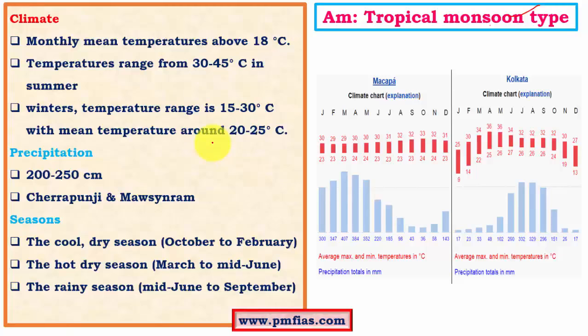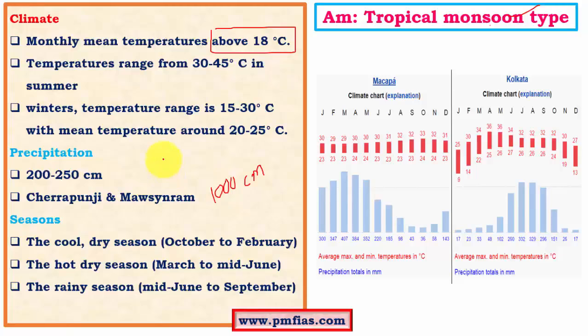Coming to precipitation, the annual precipitation is very high — 200 to 250 centimeters. In some regions like Cherrapunji and Mawsynram it might go well beyond 1,000 centimeters per year. This kind of extreme precipitation is not observed in most other regions. Even in tropical rainforests, rainfall varies between 200 to 250 centimeters and doesn't go much beyond 300 centimeters, but in tropical monsoon climate there are certain regions where rainfall can exceed 300 centimeters.